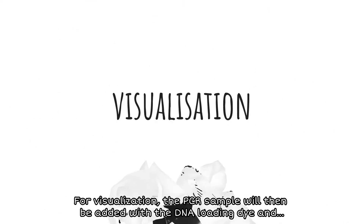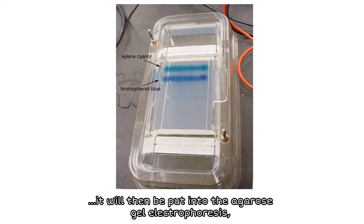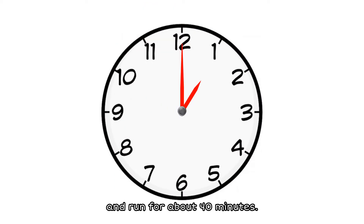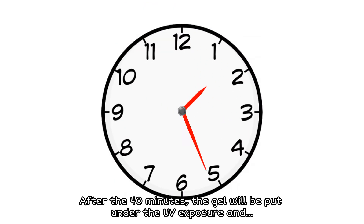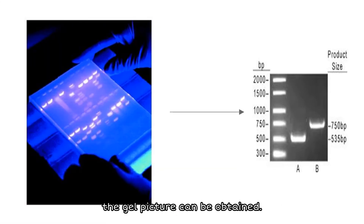For visualization, the PCR sample will then be added with DNA loading dye and put into the agarose gel electrophoresis, and run for about 40 minutes. After the 40 minutes, the gel will be put under UV exposure and the gel picture can be obtained.